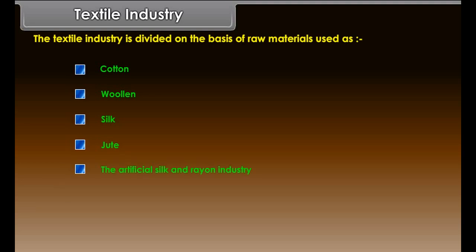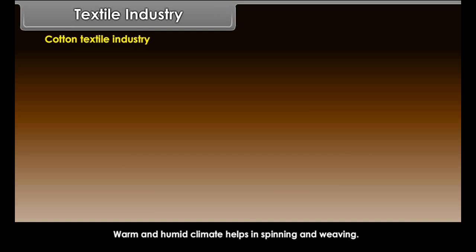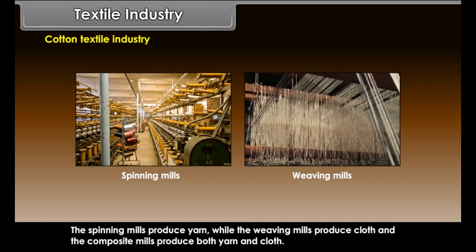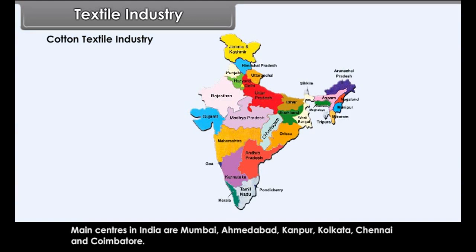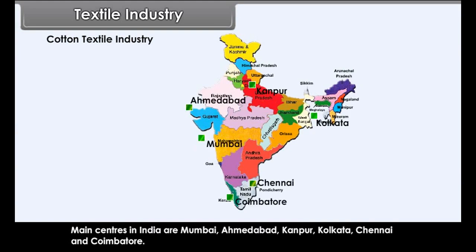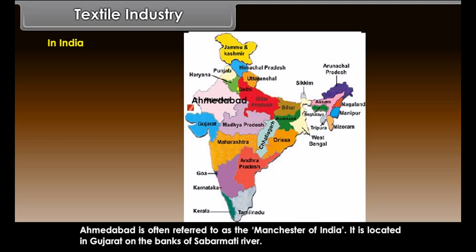The textile industry is divided on the basis of raw materials into cotton, woolen, silk, jute, and artificial silk and rayon industries. Cotton textile is an important agro-based industry. Warm and humid climate helps in spinning and weaving. Spinning mills produce yarn, weaving mills produce cloth, and composite mills produce both. China is an important producer of cotton textiles, as is India. Main centers in India are Mumbai, Ahmedabad, Kanpur, Kolkata, Chennai, and Coimbatore. Other main centers are Japan, Russia, and Georgia.